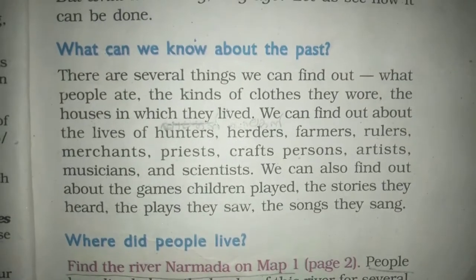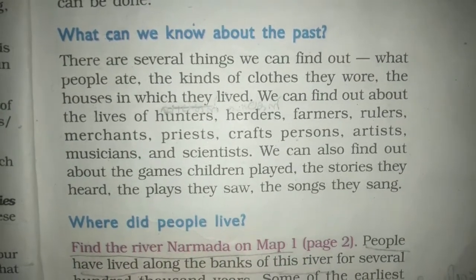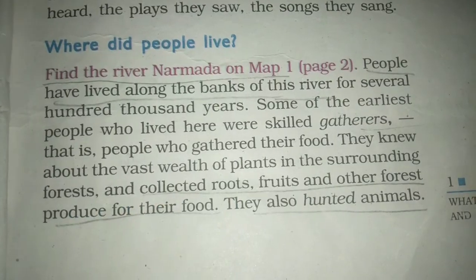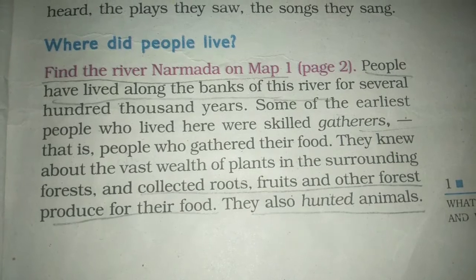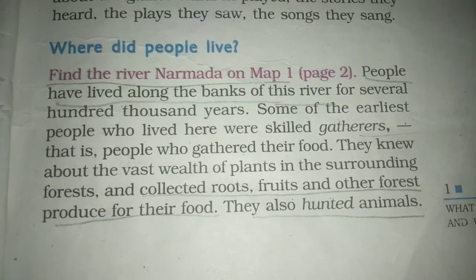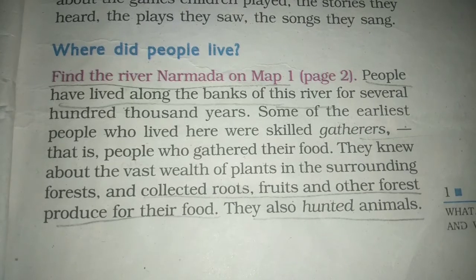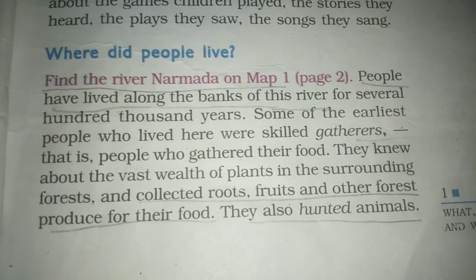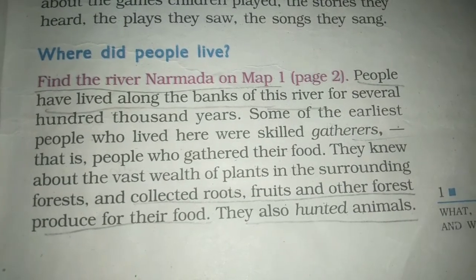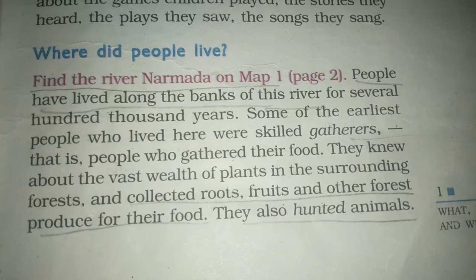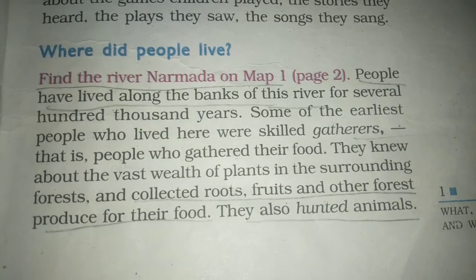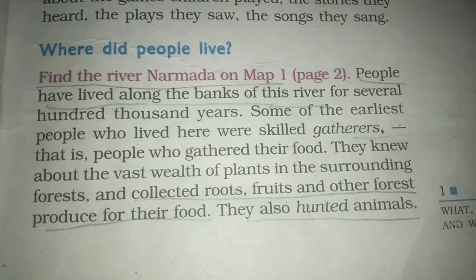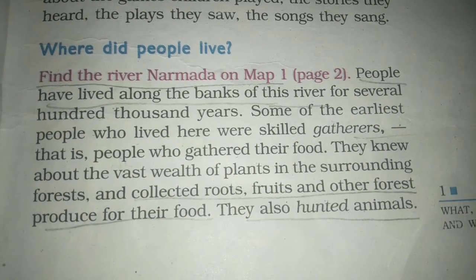We can also find out about the games children played, the stories they heard, the places they visited, and the songs they sang. The history of man has been divided into three periods: ancient, medieval and modern. At the beginning, man did not lead a settled life but wandered from place to place and did not know how to read and write.